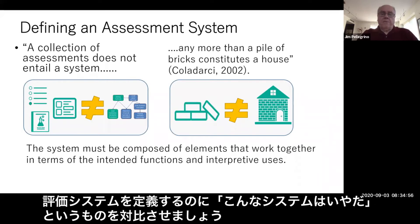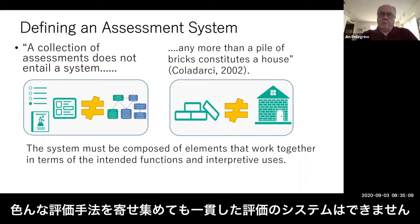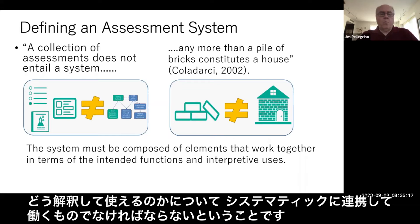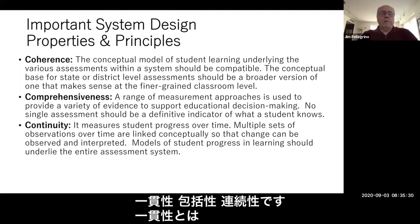We can start by defining an assessment system in terms of what it's not. One of my favorite quotes from Kola Darshi: 'A collection of assessments does not entail a system any more than a pile of bricks constitutes a house.' This tells us that a system has to be designed such that it is composed of elements that systematically work together in terms of the intended functions and interpretive uses. There are some important system design properties and principles, three of which are coherence, comprehensiveness, and continuity.